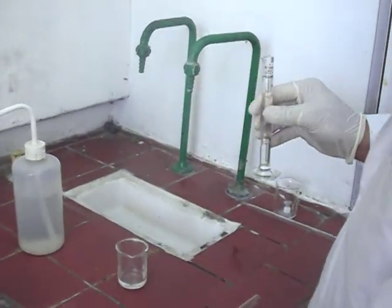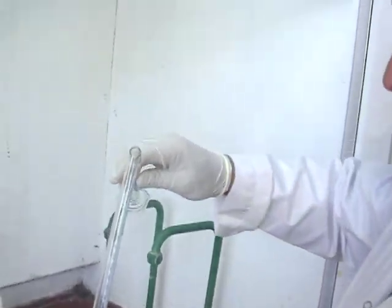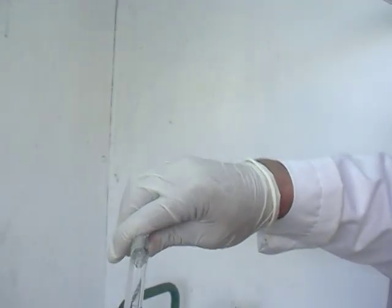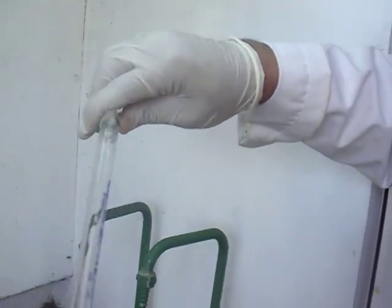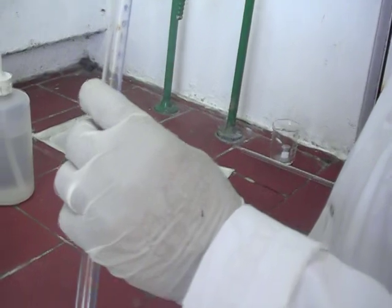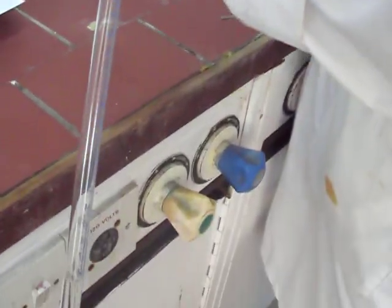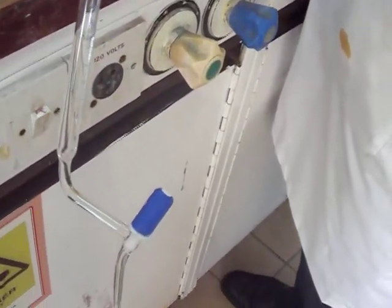Measure approximately 10 ml of the hydrochloric acid and add them to the burette. The tap of the burette has to be closed. Be careful again because it's very corrosive concentrated acid.